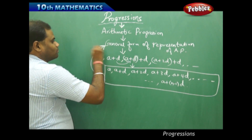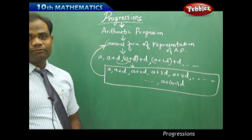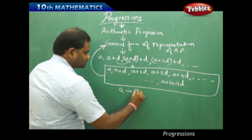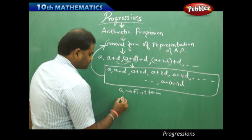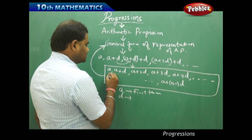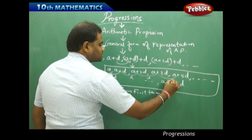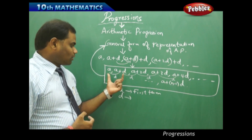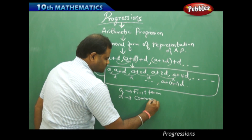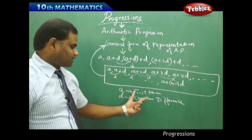This is called the general form of representing the arithmetic progression. Here A is called the first term and D is called the common difference, because every time you take the difference between consecutive terms you get D. The difference of consecutive terms is always D, so D is called the common difference for the given arithmetic sequence.